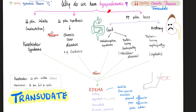You get hypoproteinemia — low protein in the blood because there is high protein in the urine. These are the causes of hypoproteinemia. Nephrotic syndrome is here — it's a protein-losing nephropathy, a kidney disease that loses protein.